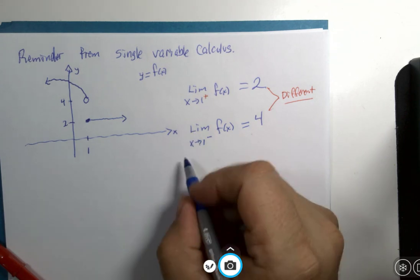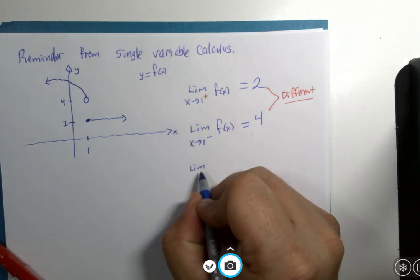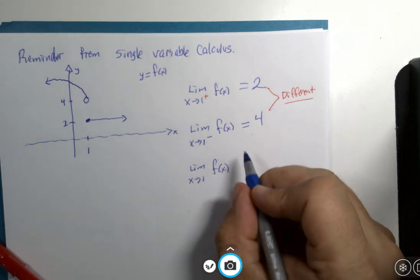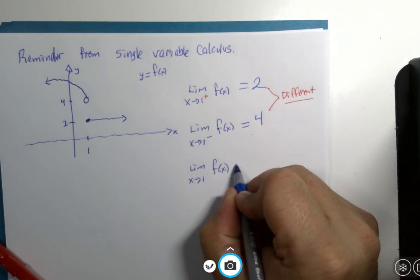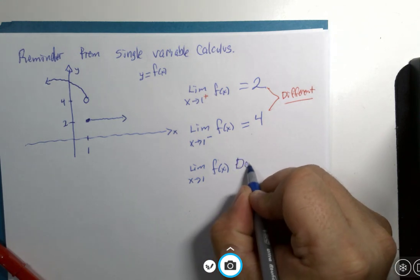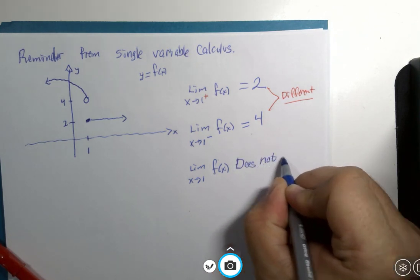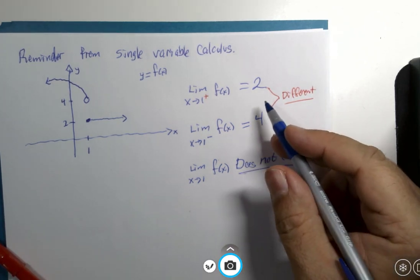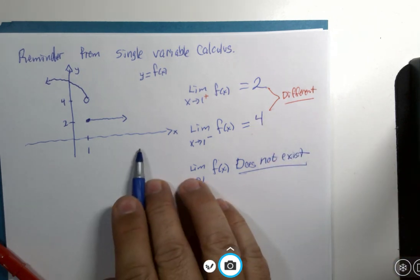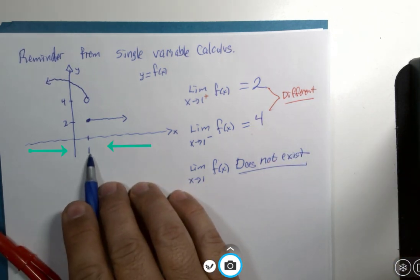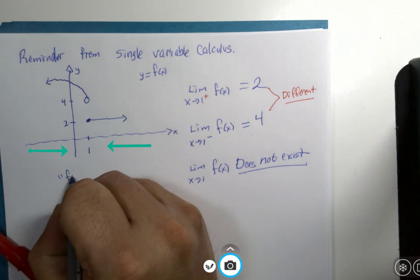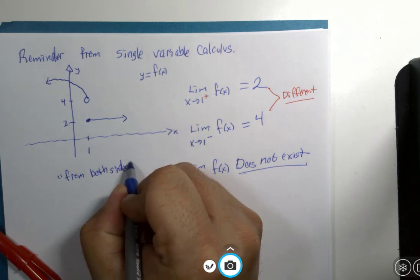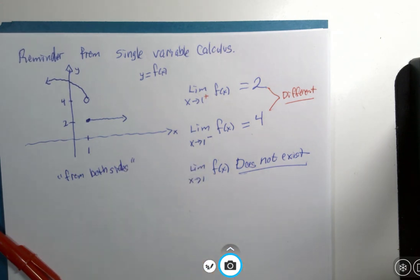that this implied that the limit as x approaches 1 does not exist, because these must both be the same as you approach from the right and from the left. From both sides became a key piece of information for dealing with our limits.